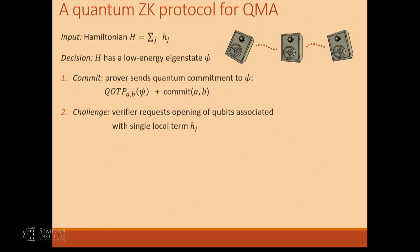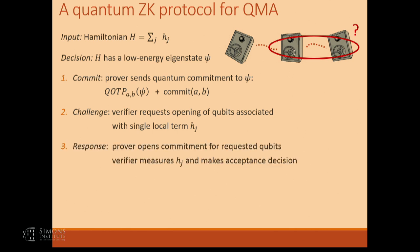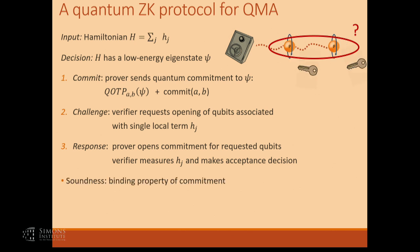The quantum one-time pad uses a classical key, but it has twice the length because you're encoding quantum information. The prover encrypts each qubit using the quantum one-time pad and also sends a classical commitment to the classical strings used to encrypt. Then the verifier says: let me choose one of my constraints at random and ask you to open the commitment. The prover returns the encryption keys; the verifier checks they match the commitment, uses them to decrypt the state, performs the measurement, and checks that it satisfies the constraint.